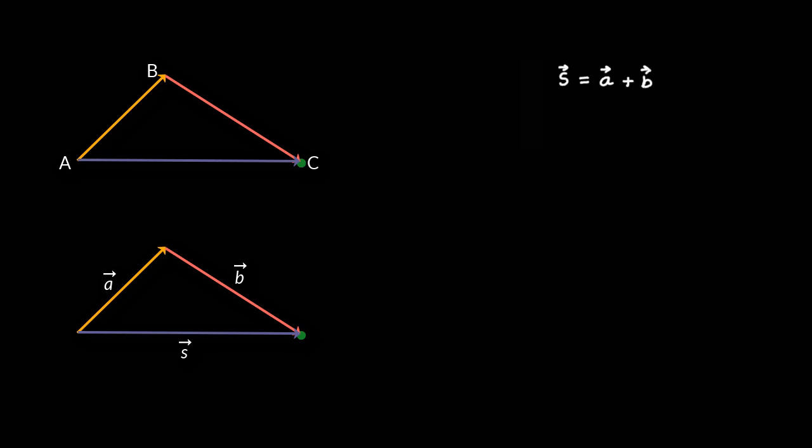So you see, it is as simple as sketching an arrow with length A in the correct direction, then arrow B with correct length and direction, and then just extending another arrow from here to here, which becomes your resultant vector.